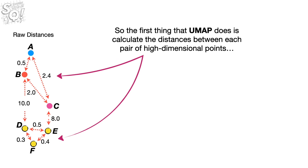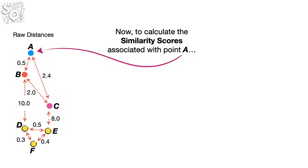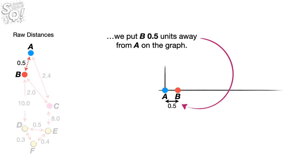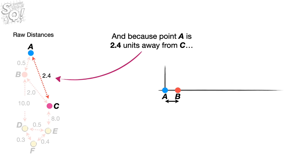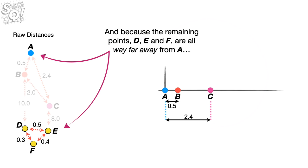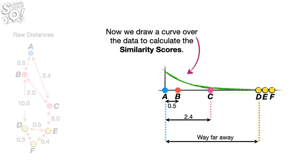The first thing that UMAP does is calculate the distances between each pair of high-dimensional points. To calculate the similarity scores associated with point A, we start by putting point A on a graph. Because point A is 0.5 units away from point B, we put B 0.5 units away from A. Because point A is 2.4 units away from C, we put C 2.4 units away from A. And because points D, E, and F are all way far away from A, we put them way far away on the graph.